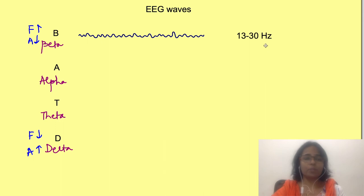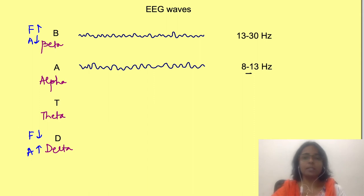Here are their frequencies. Beta waves are 13 to 30 hertz, alpha waves 8 to 13 hertz, theta waves 4 to 7 hertz, and delta waves have frequency less than 4 hertz.